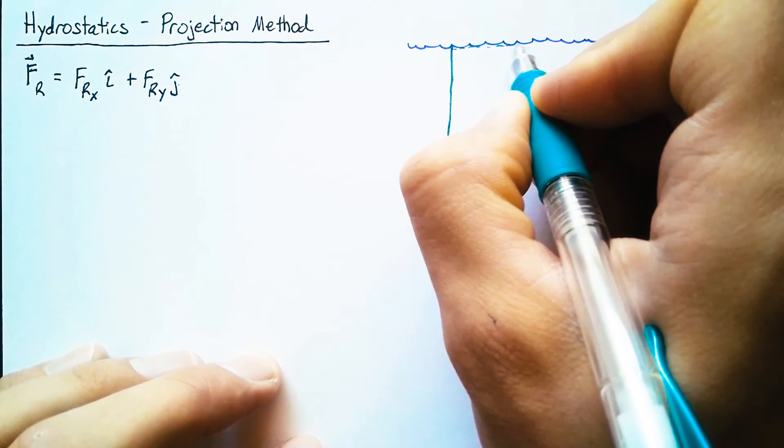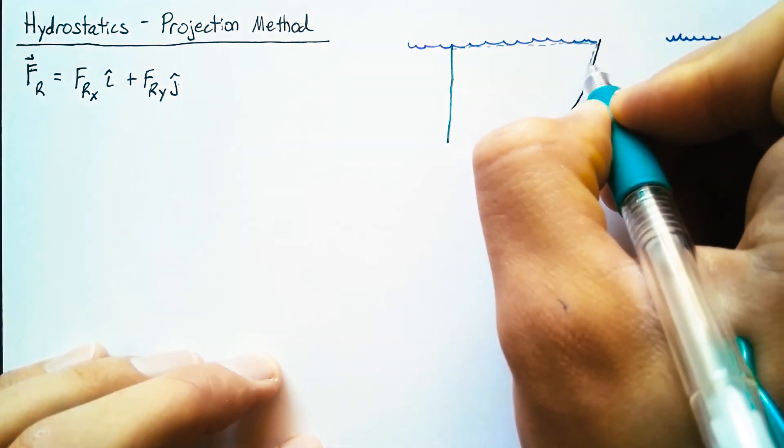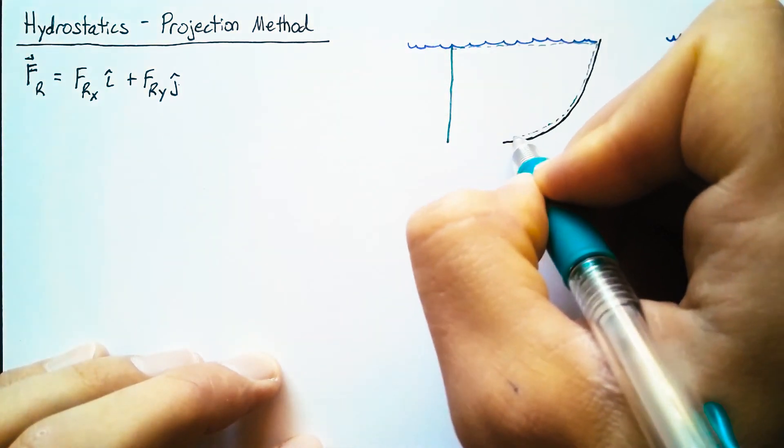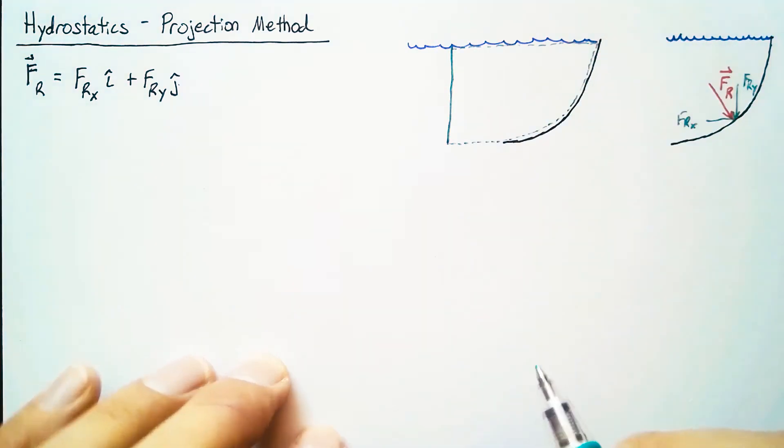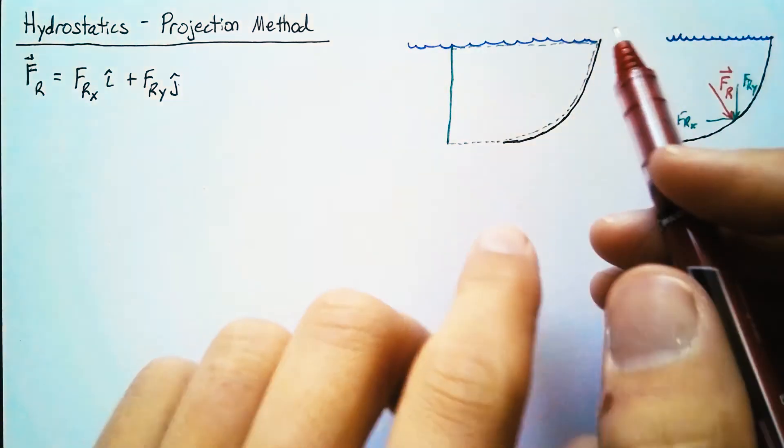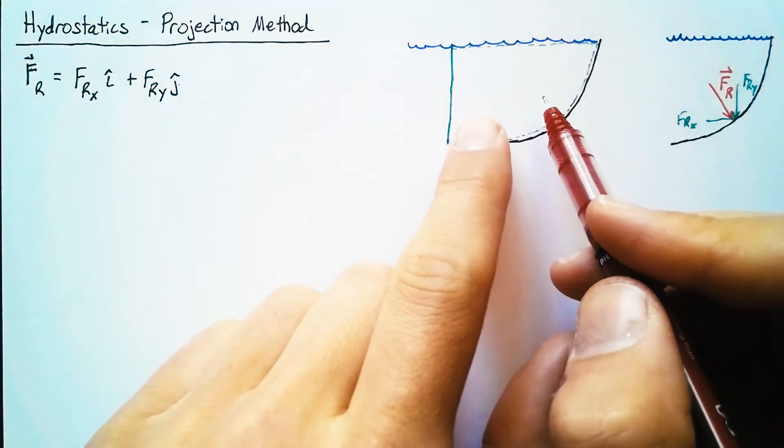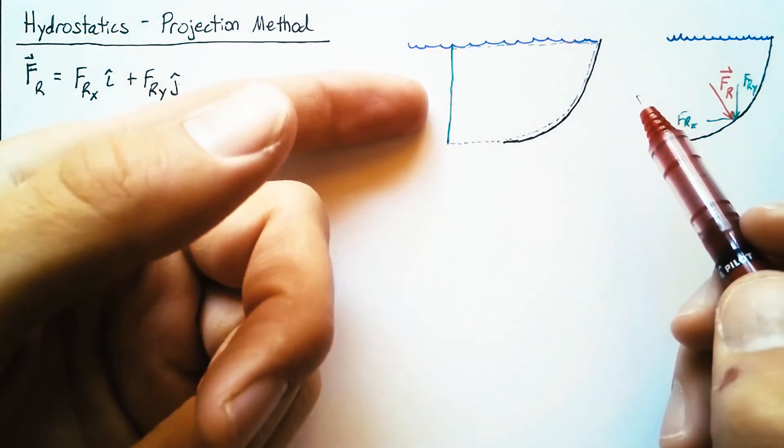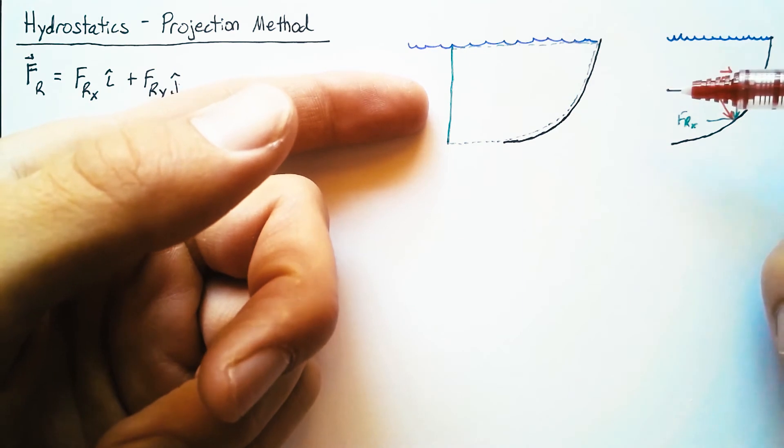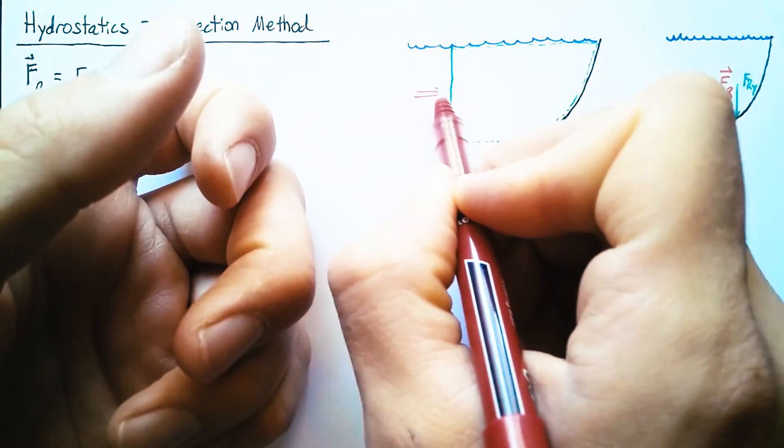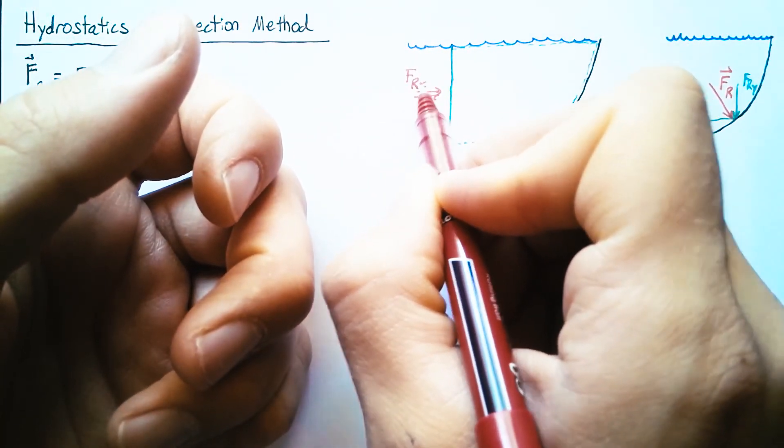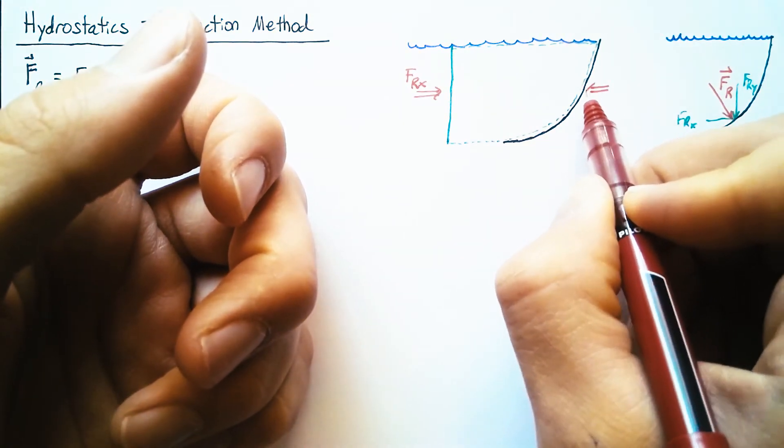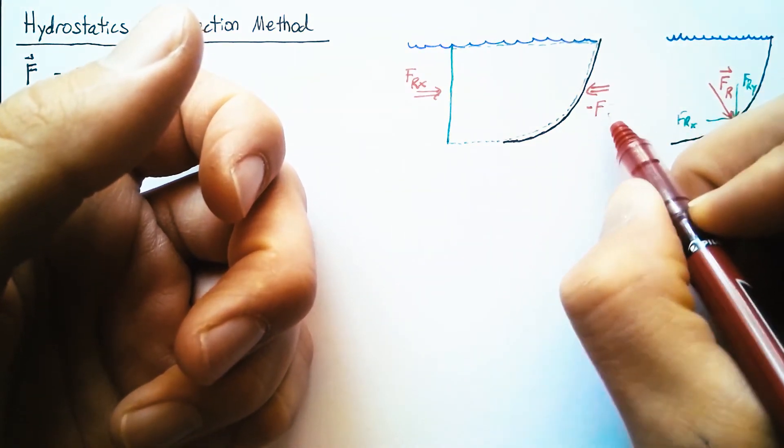What this does for us is it helps us define a volume of water that's enclosed between these two walls. If we're looking purely in the x direction and this water isn't moving, then we know that the forces on the left side and the right side have to be equal. So we can have some force in the x that has to be equal to an equal and opposite force on the right.